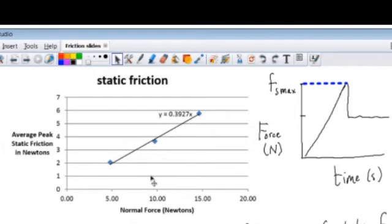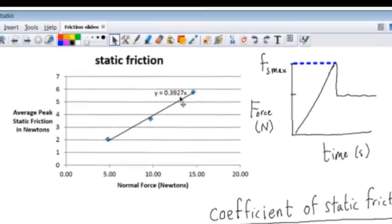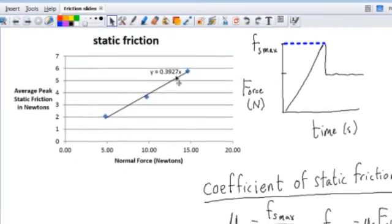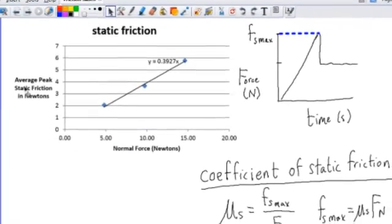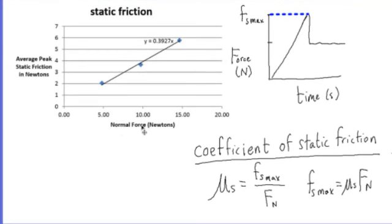I plot the maximum static friction as a function of the normal force. The normal force is a measure of how hard two surfaces are being pressed together. And when I make that graph, I see it as a straight line.